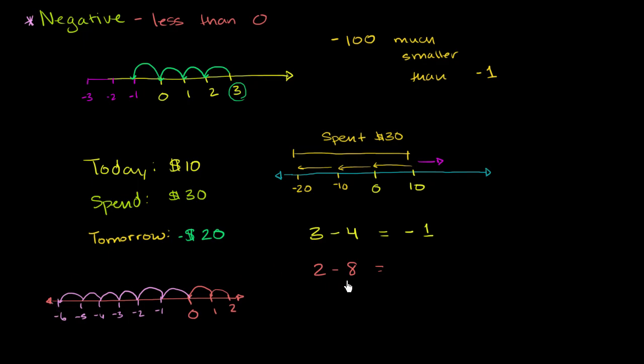So 2 minus 8 is negative 6. 2 minus 2 would be 0. When you're subtracting 8, you're subtracting another 6. So we go to negative 6. We go 6 below 0. Let me do one more example. And this will be a little less conventional for you. But hopefully, it will make sense.